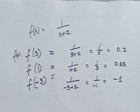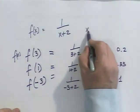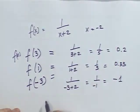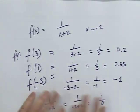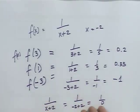There is a value where it's not defined. That's when x equals -2, because x plus 2 equals 0, and you can't divide by zero.